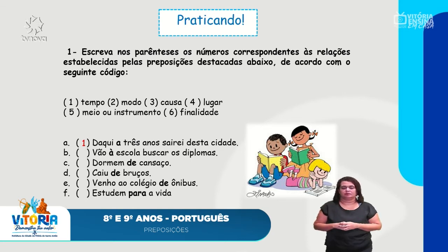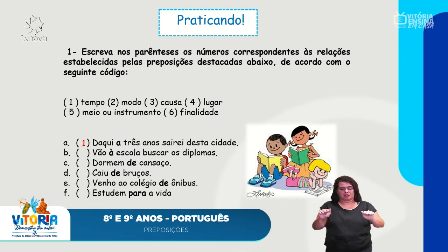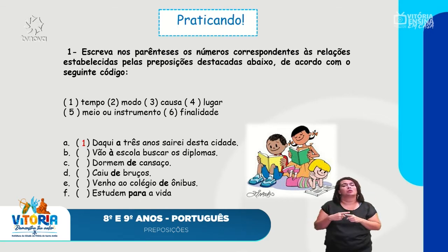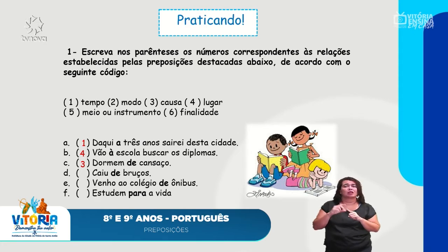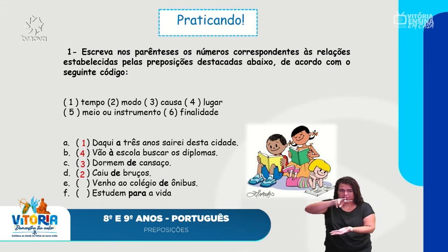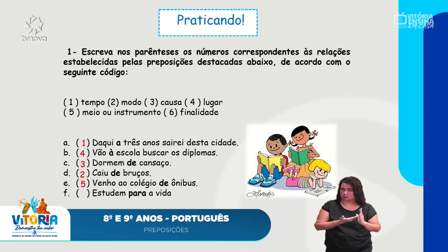Na letra B: 'Vão à escola buscar os diplomas.' O 'à' tem a presença da crase — artigo mais preposição — no sentido de 'para', indicando lugar. 'Dormem de cansaço' — esse 'de' indica causa; dormem porque estão cansados. 'Caiu de bruços' — indica modo. 'Venho ao colégio de ônibus' — indica meio ou instrumento. 'Estudem para a vida' — indica finalidade.